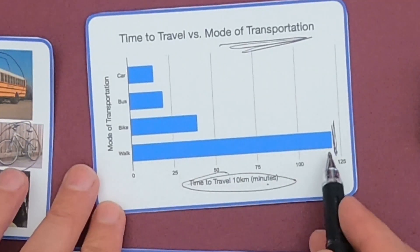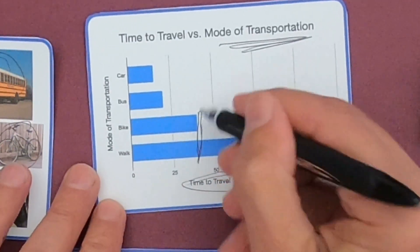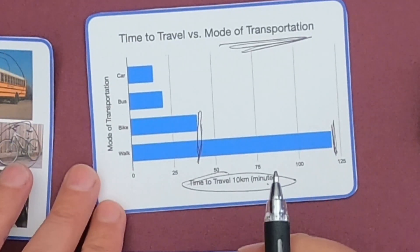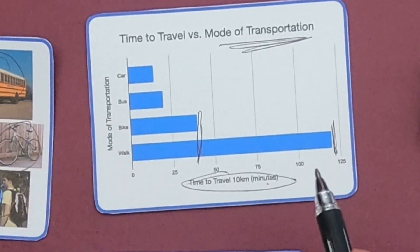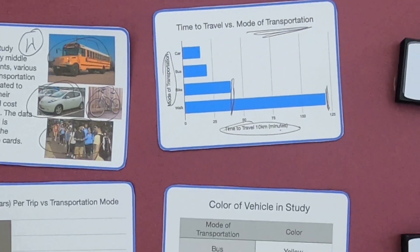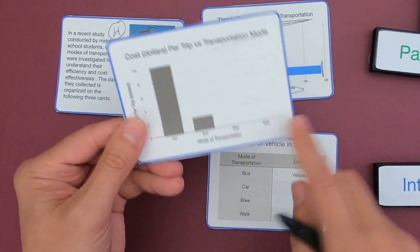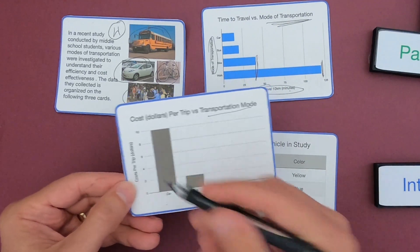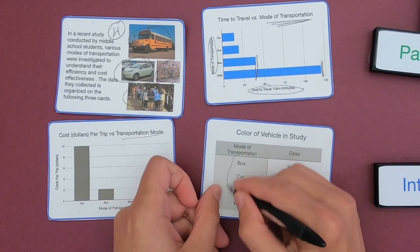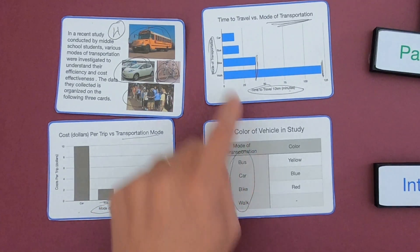You can highlight important things — for example, walking took maybe 115 minutes, versus biking which looks like it took maybe 40 minutes. The next bit of data is again transportation mode — car, bus, bike, and walk — and then the amount of cost, how much each mode costs per trip. The final variable in the study is color. So in all of these, we're really looking at that mode of transportation as the common element.